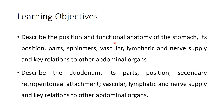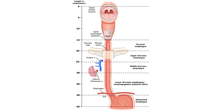We will talk about both the stomach and the duodenum, but we will start with a very important structure — the esophagus. The esophagus is a muscular tube extending from the pharynx to the stomach, around 25 cm in length. This muscular tube follows the curvature of the vertebral column.